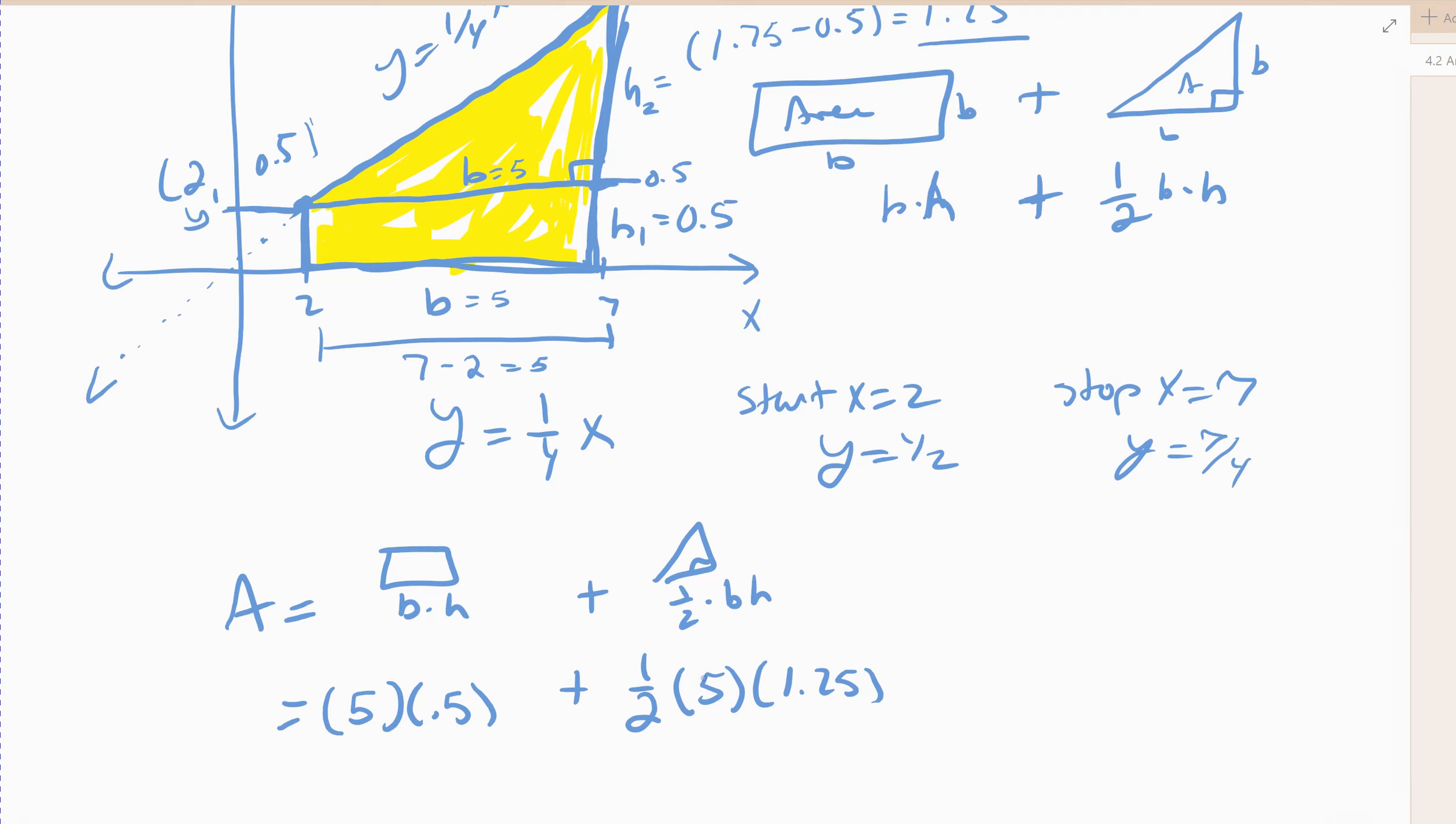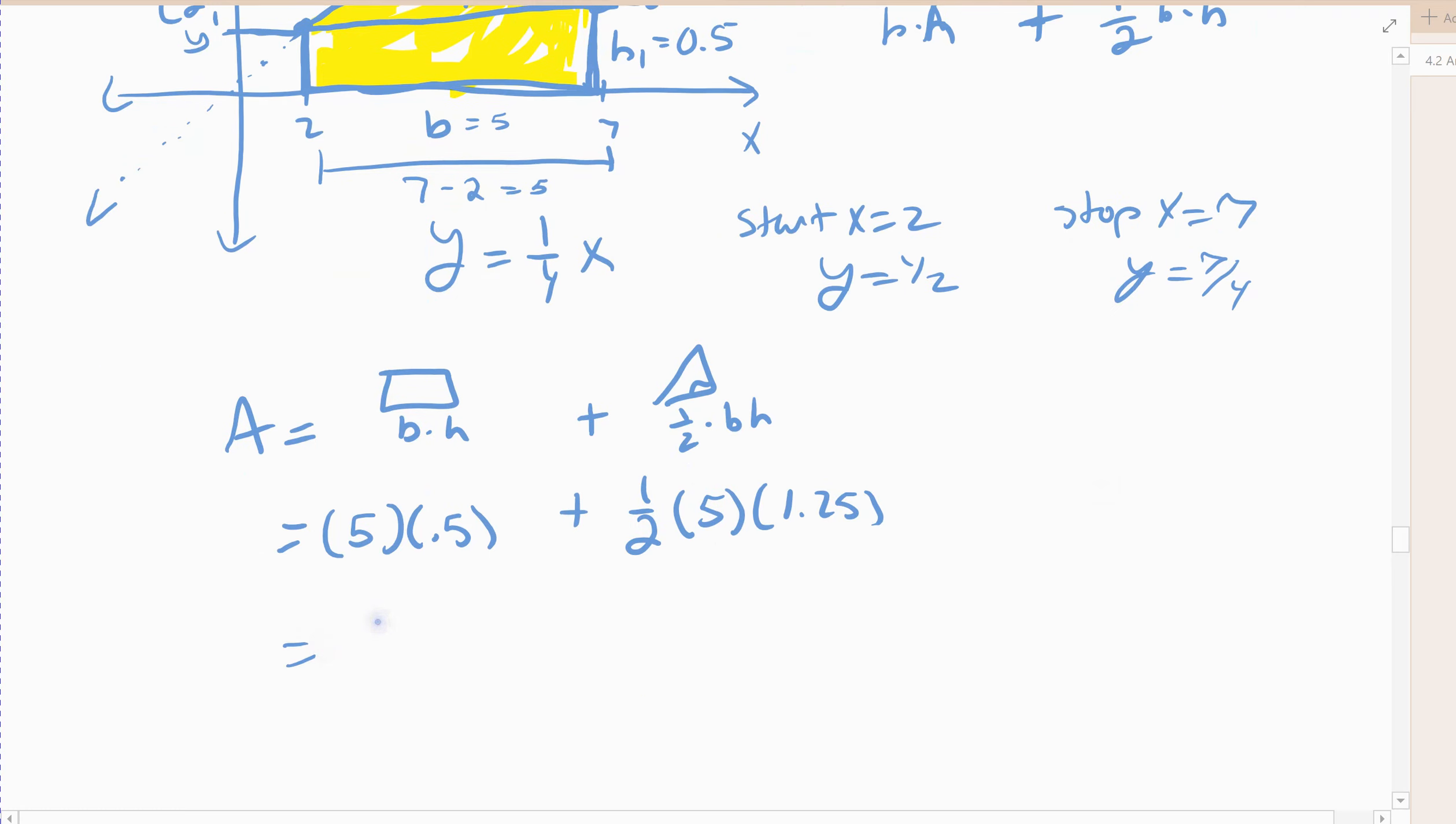5 times 1.25. All right, give me a second while I find my calculator to type that out. So 5 times 0.5 plus 0.5 times 5 times 1.25.